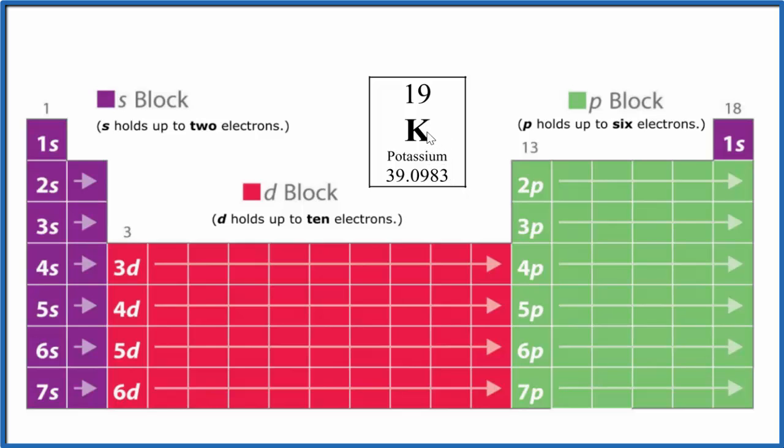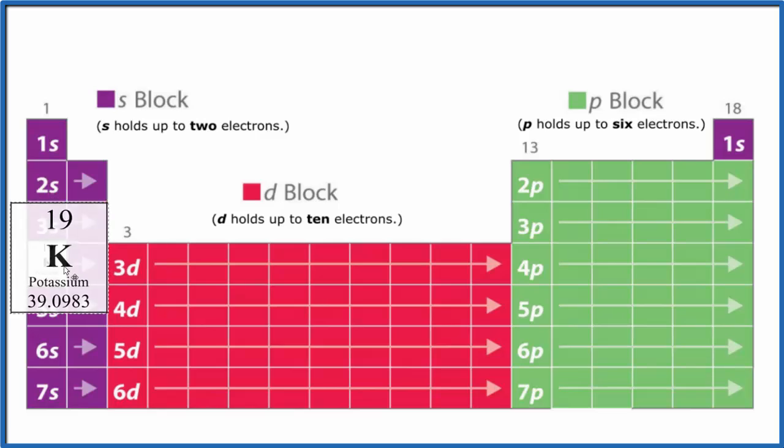And the first thing we need is an electron configuration for potassium. So potassium, that's right here on the periodic table. And potassium has an atomic number of 19, so it'll have 19 protons and 19 electrons, since all the elements on the periodic table are neutral.